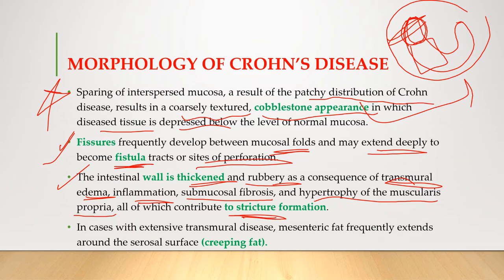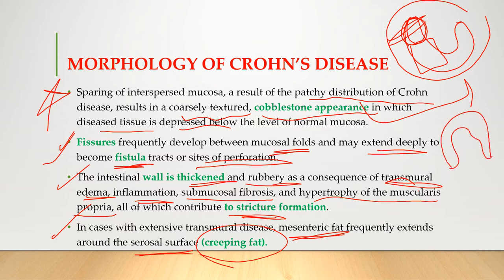In cases with extensive transmural disease, mesenteric fat frequently extends across and around the serosal surface. This is known as creeping fat. In Crohn's disease, fat accumulation develops around the small intestine due to extensive transmural involvement.